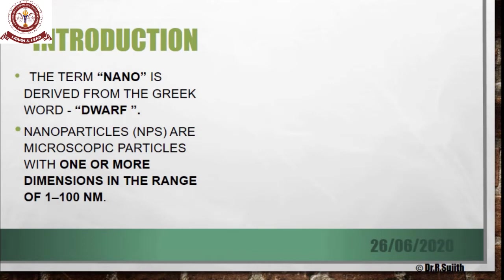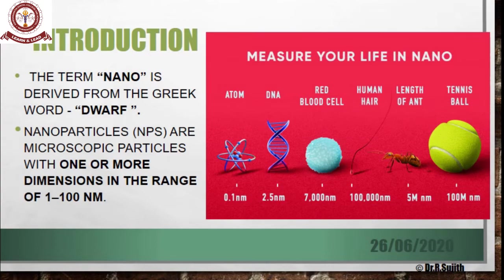First we will see the introduction. The term nano is derived from the Greek word meaning dwarf. Nanoparticles are microscopic particles with one or more dimensions existing in the range of 1 to 100 nanometers, which we express as 10 to the power of minus 9. The size of a nanometer exists between the size of an atom — the length of two hydrogen atoms is equal to one nanometer.